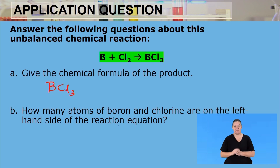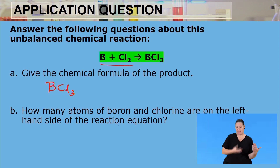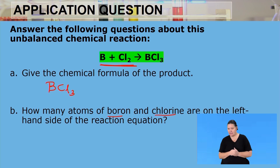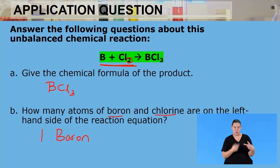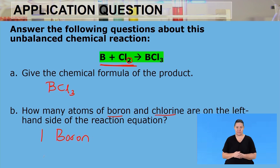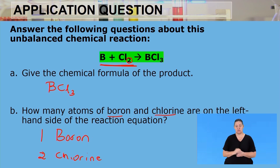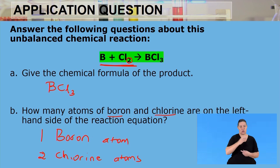Part B: how many atoms of boron and chlorine are on the left-hand side of the equation? The left-hand side refers to the reactants. Looking at B + Cl2: there is only one boron atom. The subscript 2 on Cl2 tells us there are two chlorine atoms. So the answer is one boron atom and two chlorine atoms.